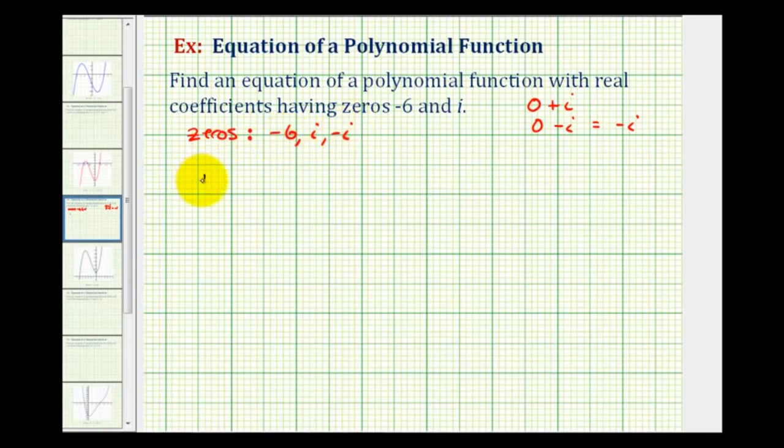So from here, we know the factors of our function. Our function must contain a factor of x minus negative six, which we'll simplify in the next step, a factor of x minus positive i, and also a factor of x minus negative i. Again, we don't need a constant here because notice how our binomial factors do not contain any fractions.